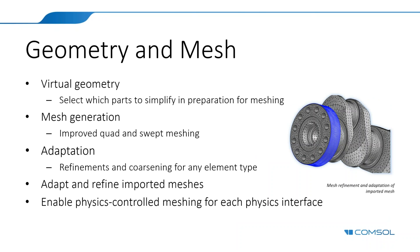On the geometry and mesh side, there are lots of improvements to the virtual geometry features. Virtual geometry operations are used to prepare your model for meshing by simplifying it — for example, removing small unnecessary geometric details that would generate a denser mesh requiring more time and memory. In this version you can now select which parts to simplify and have individual settings for each selection, using the remove details feature. You can add several remove details feature nodes, each with an individual selection and different tolerance settings.